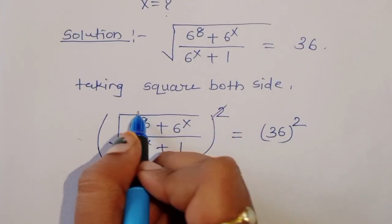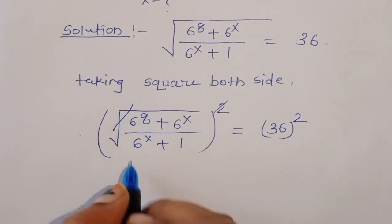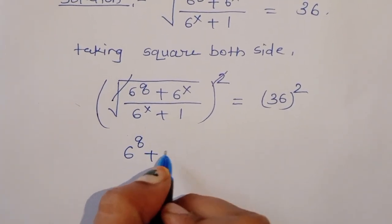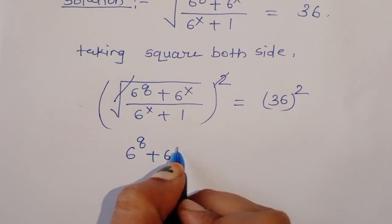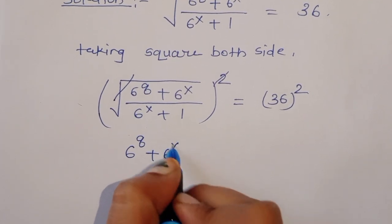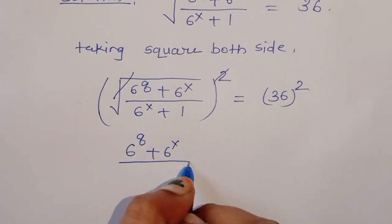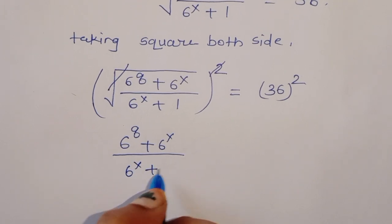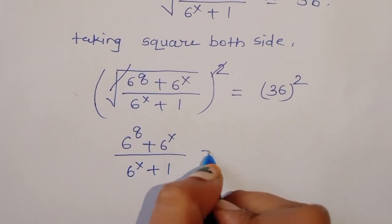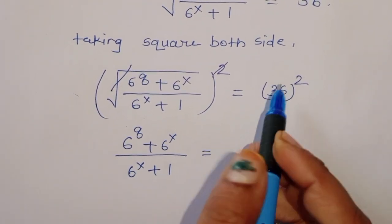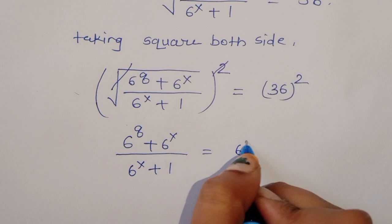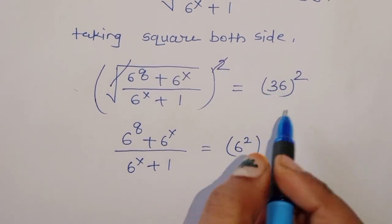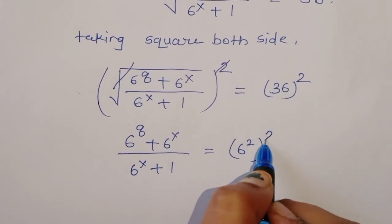Now the square root and the square will cancel from here. So we get: 6 raised to 8 plus 6 raised to x, divided by 6 raised to x plus 1, is equal to 36 squared, which we can write as 6 squared, that is 36, whole squared — so 6 raised to 4.